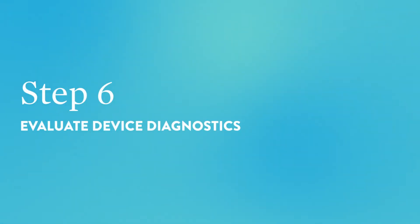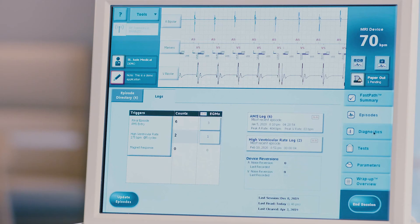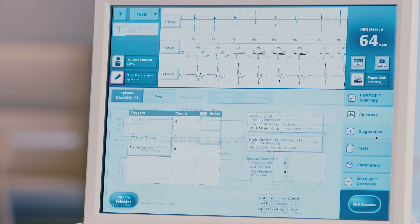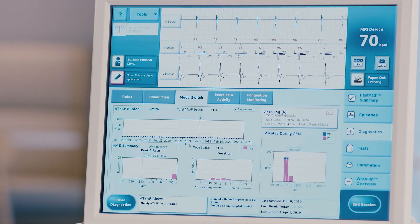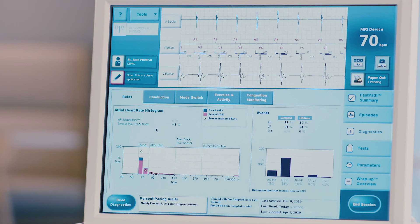Step 6: Evaluate device diagnostics. Press the diagnostics tab on the right hand side of the screen. The rates tab will appear first. Evaluate the atrial heart rate histogram.